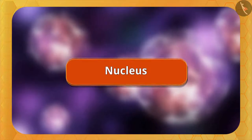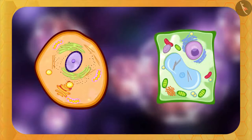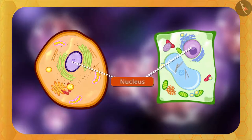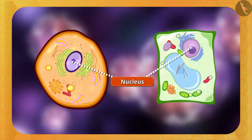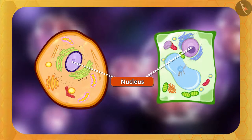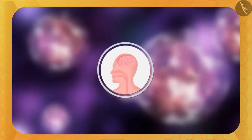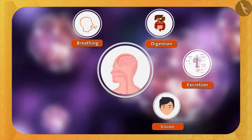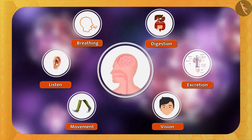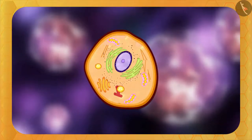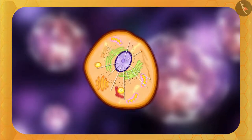Now let's understand about the nucleus. In both plant and animal cells there is a spherical structure in the center — that is the nucleus. It is the control center of the cell, just as the brain directs and controls all the processes in our body such as breathing, digestion, excretion, vision, and movement.